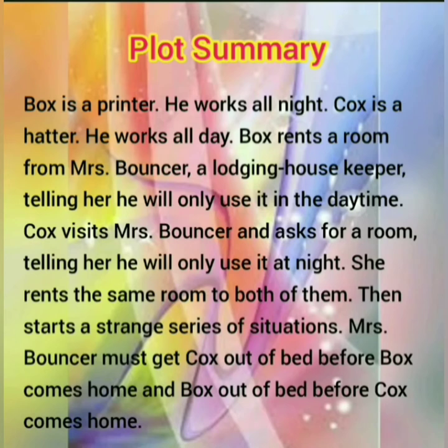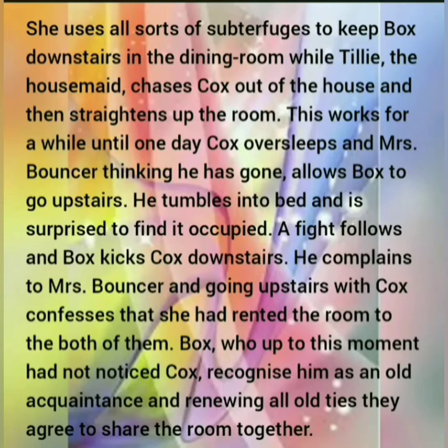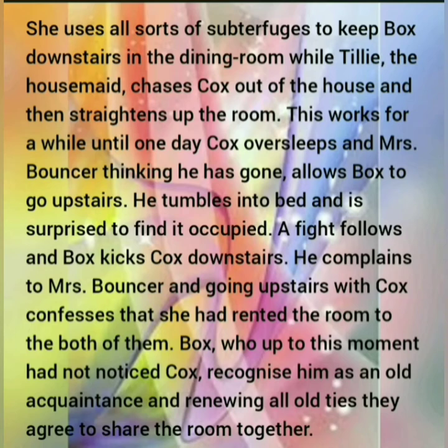Mrs. Bouncer must get Cox out of bed before Box comes home and Box out of bed before Cox comes home. She uses all sorts of subterfuges to keep Box downstairs in the dining room while Tylee, the housemate, chases Cox out of the house and then straightens up the room. This works for a while until one day Cox oversleeps and Mrs. Bouncer, thinking he has gone, allows Box to go upstairs. He tumbles into bed and is surprised to find it occupied. A fight follows and Box kicks Cox downstairs.